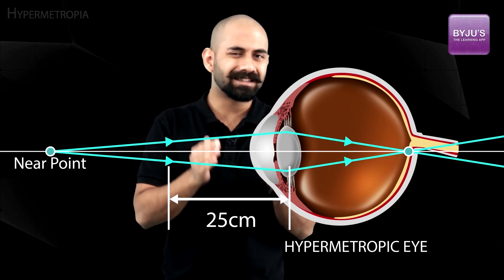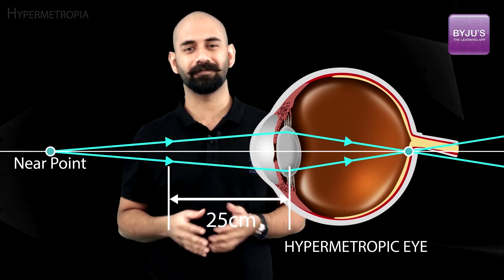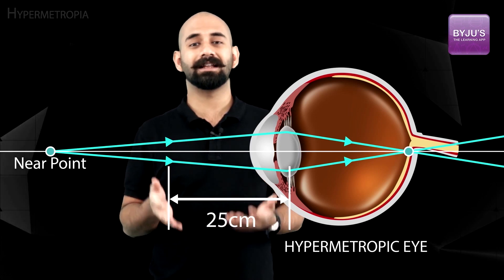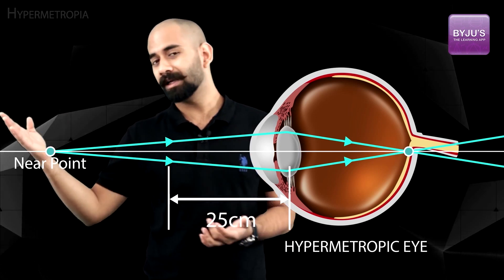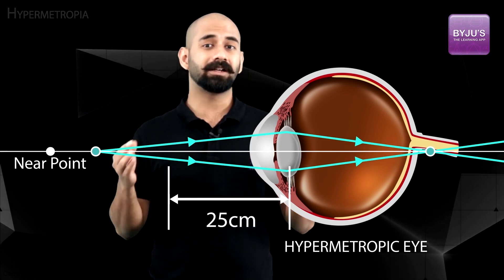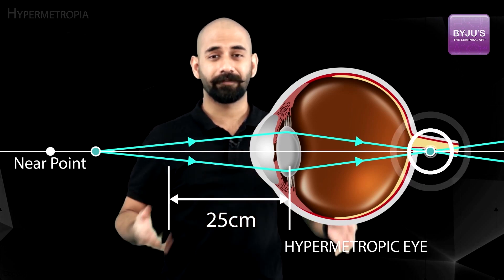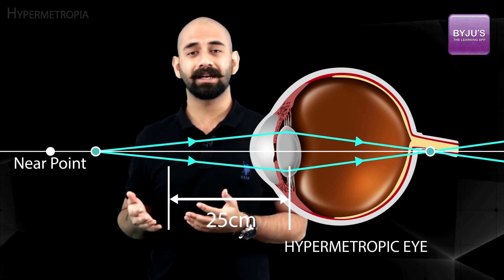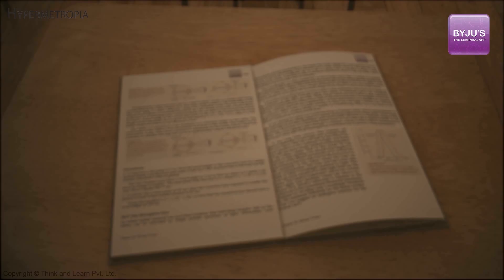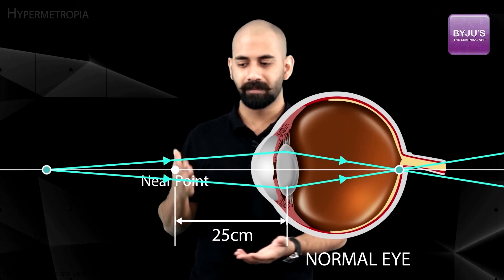When the object is at the near point, the crystalline lens is already at its minimum focal length — it cannot compress any further. So if the object comes closer than that near point, the image ends up being formed behind the retina. Therefore a hypermetropic eye sees a blurry image when trying to focus on an object closer than its near point.